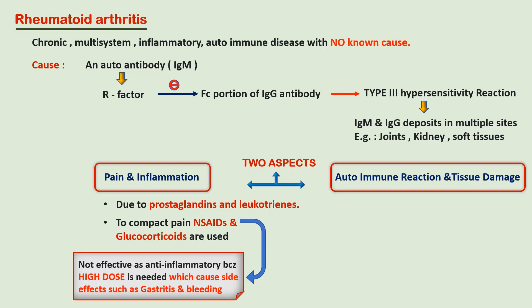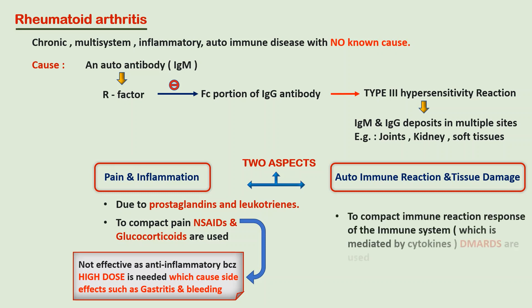The next aspect is to reduce the autoimmune reaction. To combat the immune-mediated problem, mainly by various mediators like cytokines — for example, tumor necrosis factor alpha — we use DMARDs, that is the disease-modifying anti-rheumatic drugs.